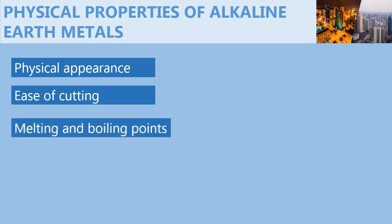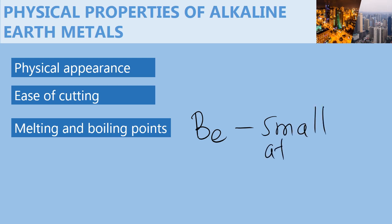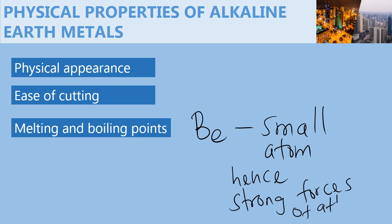As for the melting and boiling points, beryllium has a very high melting and boiling point compared to other alkaline earth metals. This is due to the very small atom of beryllium, which has strong forces of attraction between atoms. As you will learn, the smaller the atom for metals, the stronger the forces of attraction.